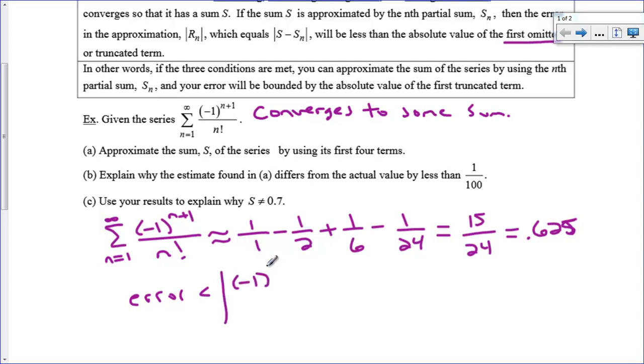What's the first term that we omitted? That's going to be five. So what we're going to do is we're going to say the error is less than the absolute value of negative one to the five plus one over five factorial. That's the absolute value of that. And that's going to equal one over one hundred and twenty. Five times four times three times two times one is one hundred and twenty.